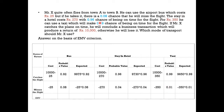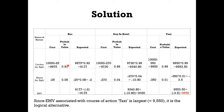Calculating the EMV for each option: Bus: (0.92 × 9,975) + (0.08 × −25) = 9,177 − 2 = ₹9,175. Hotel: (0.96 × 9,730) + (0.04 × −270) = 9,340.80 − 10.80 = ₹9,330. Taxi: (0.99 × 9,650) + (0.01 × −350) = 9,553.50 − 3.50 = ₹9,550. The maximum EMV is ₹9,550, so Mr. X should take the taxi. Taking the taxi is the most logical alternative.